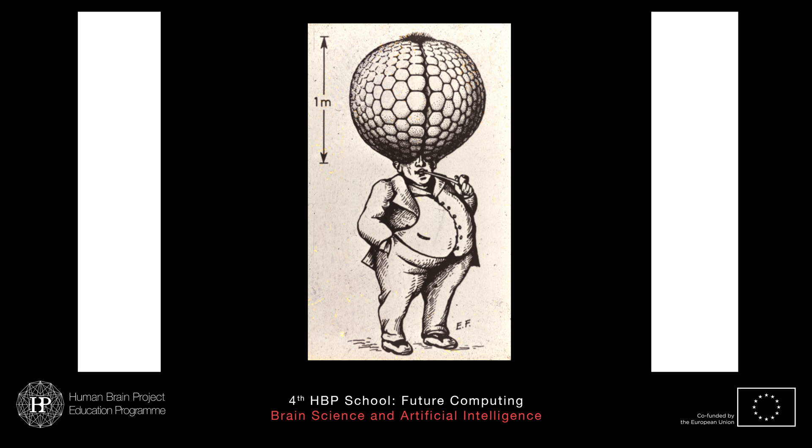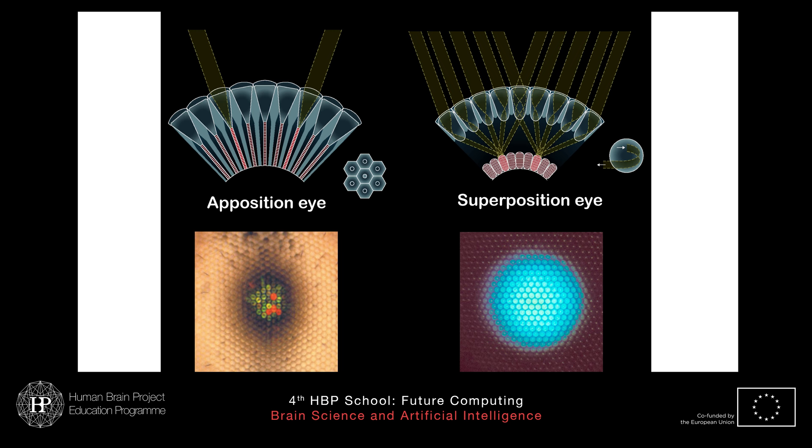We have to move our gaze around, but it's amazing how we still have the impression that the world has the same spatial resolution wherever we point our gaze. So if you look in one direction, you think it looks sharp there — but of course it's equally sharp in another direction when you look there, because then you've moved your gaze.